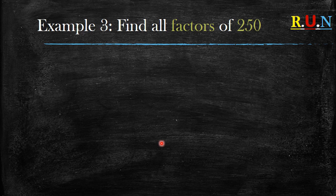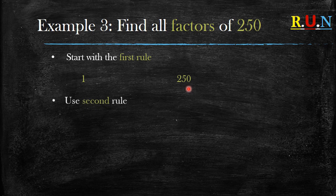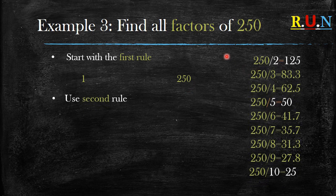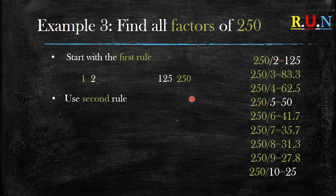Example number three: find all factors of 250 — a bit of a complex number. We start with rule one: write 1, space, 250. Then rule two: 250 divided by 2 gives you 125, so write 2 on this side and 125 on the other. 250 divided by 3 gives 83.3 — not a whole number, so skip it. 250 divided by 4 gives 62.5 — also not a whole number. 250 divided by 5 gives you 50 — a whole number — so write 5 on this side and 50 on the other.